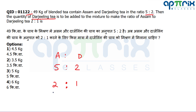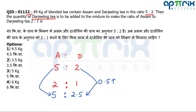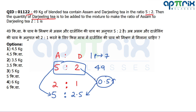Since Assam is not changing, rewrite the final ratio 2:1 to make the Assam component equal to 5 — multiply by 2.5 to get 5:2.5. The increase in Darjeeling is 0.5 parts. Since the total original mixture is 49 kg, that's 7 parts, so one part equals 7. Therefore 0.5 parts = 3.5 kg of Darjeeling tea needs to be added.